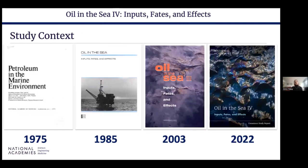To provide a little bit of context: this study is the fourth in a series that the National Academies has conducted to discuss the state of knowledge on inputs, fates, and effects of oil in the sea, and to recommend actions to reduce these inputs and effects. The first report was published in 1975, and it has now been 20 years since the previous one. Our latest report was published at the end of last year, and a lot has happened in those 20 years — we have seen an unprecedented growth of oil spill science, which we tried to capture in our latest report.